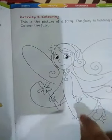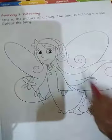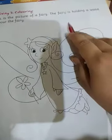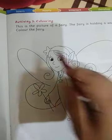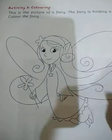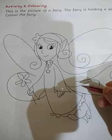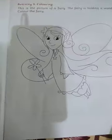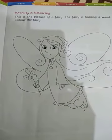Now, come to the page number 9. Activity 3. Coloring. I know you all love coloring. Look here. This is a picture of a fairy. Fairy means pari. The fairy is holding a wand. Color the fairy. So, what we have to do? We have to color this fairy. You have to fill color in this fairy of your own wish. And this is your home assignment also.